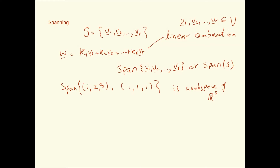The concept of spanning introduces an excellent idea: you can have certain situations where a set of vectors spans an entire vector space. For instance, the vectors (1, 0) and (0, 1) span the entire R2 space. The span of these two is in fact R2 — every single vector in R2 can be expressed as a linear combination of these two.